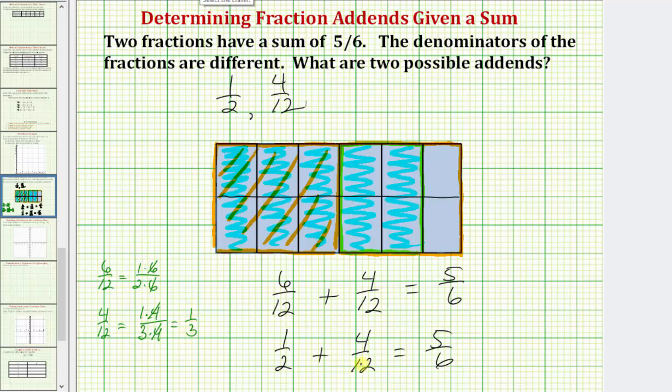Which means it's also true that one-half plus one-third is equal to five-sixths. So we could also list these two fractions as two possible addends: one-half and one-third.